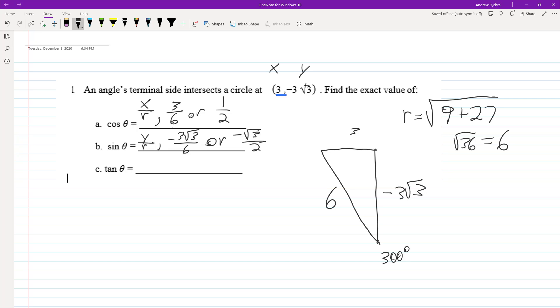Finally, tangent is y over r, excuse me, y over x. It's going to be negative 3 root 3 over 3 or negative root 3 because the 3's cancel out.